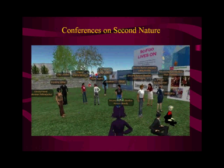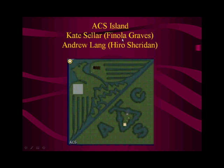We've had conferences — here's an example of a conference I organized called the Saifu Lives On conference on Nature Island. You can see lots of people hanging around and talking, using poster boards for presentations. This is ACS Island — it actually has the shape of the ACS logo, with the land and water giving it the outline. So if you see lots of moats and fall in them, that's the reason.